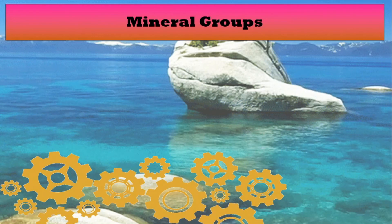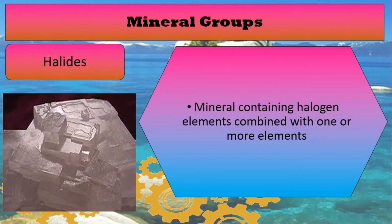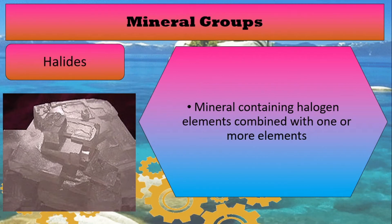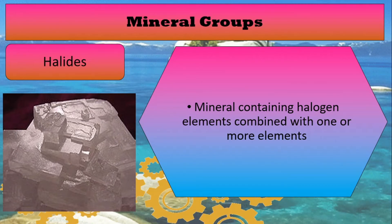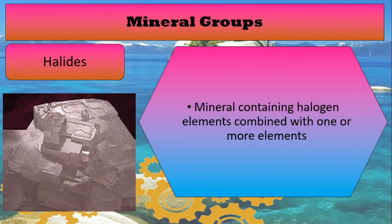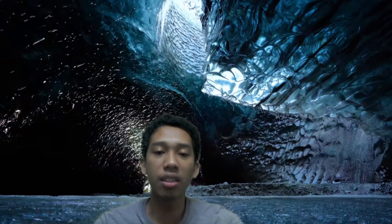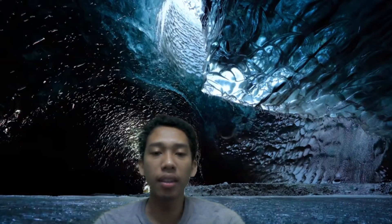The last mineral group is halides. Halides are minerals containing halogen elements combined with one or more elements. Some halides are used in metal halide lamps, which are high-intensity lamps. That ends our episode for today. I hope you learned new knowledge about rock-forming minerals together with their physical properties. Again, this is Sir Eman of The Scientific Mind, and see you in the next episode.